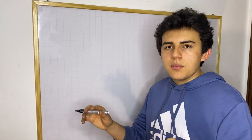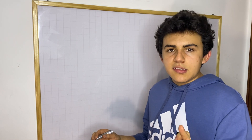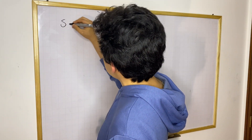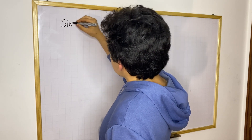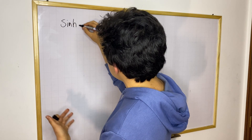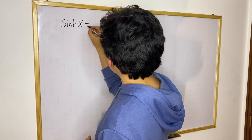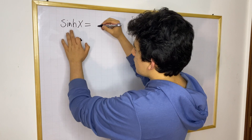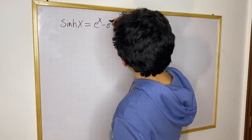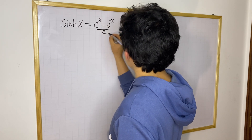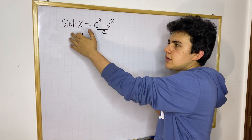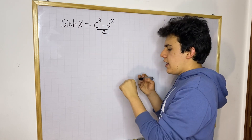The two most fundamental hyperbolic functions are hyperbolic sine and hyperbolic cosine. Hyperbolic sine is written as sinh — the 'h' indicates it's hyperbolic and not the common sine of x — and it is defined as: sinh(x) = (e^x − e^(−x)) / 2. This is the definition of hyperbolic sine.